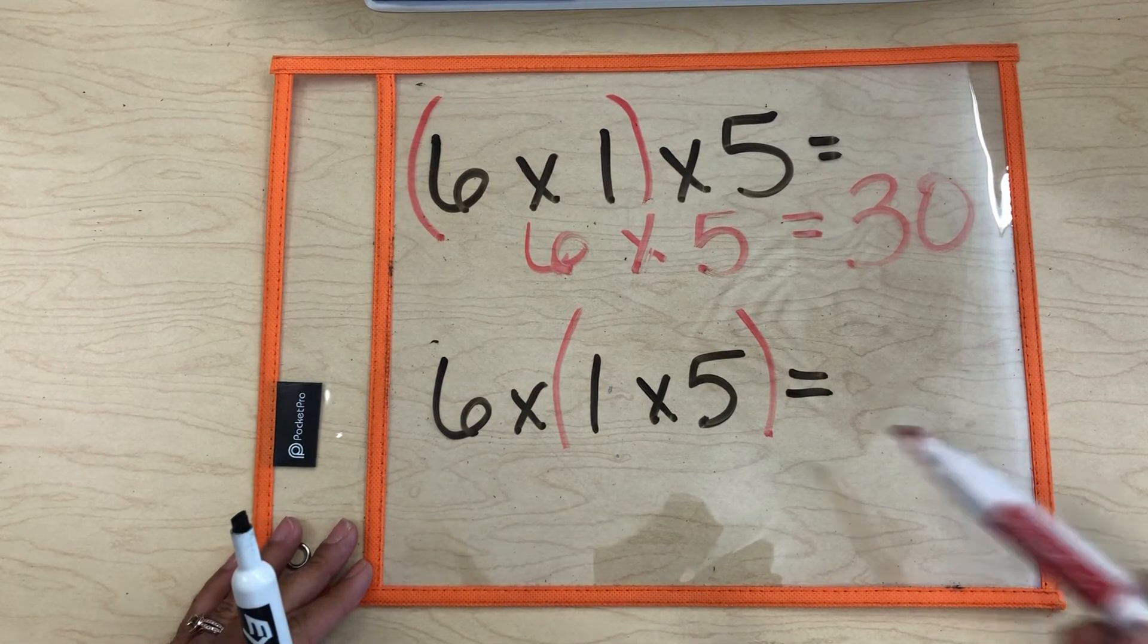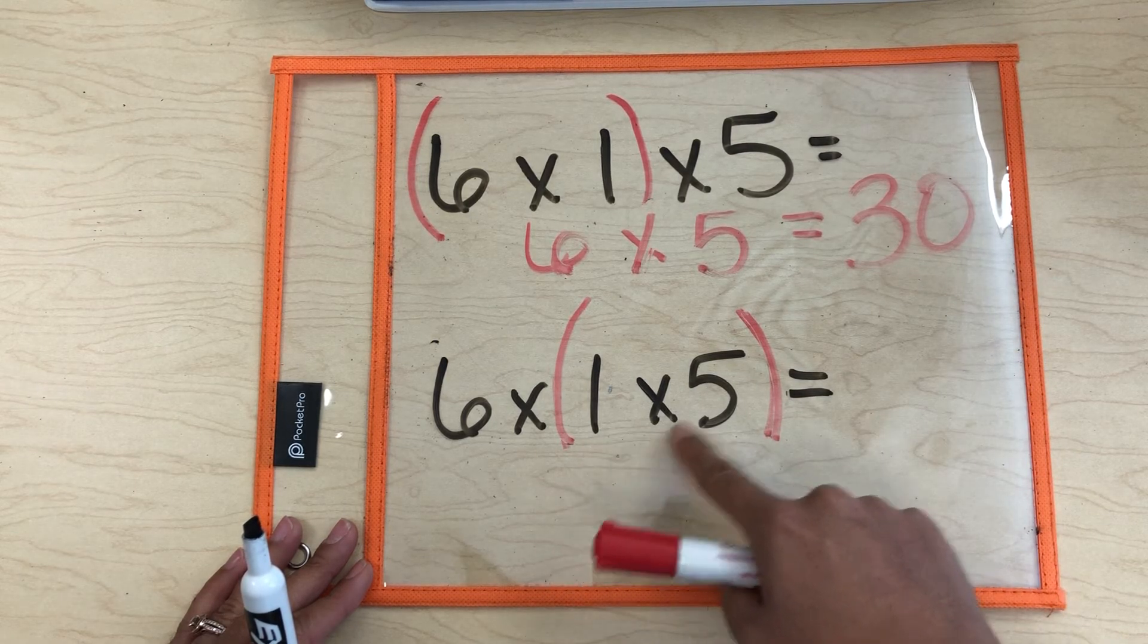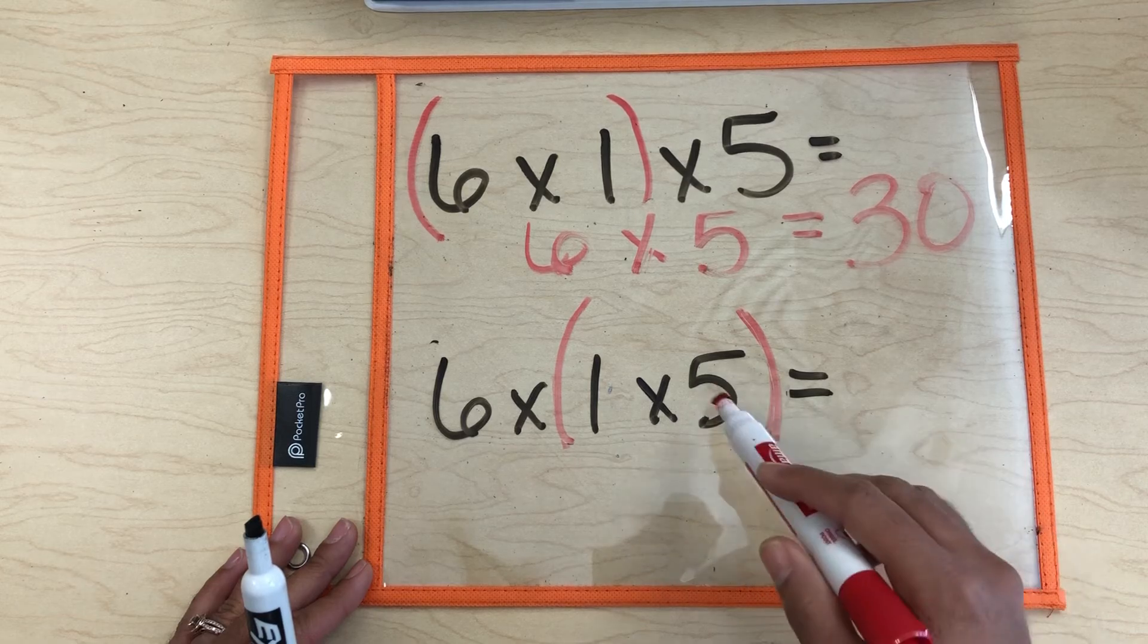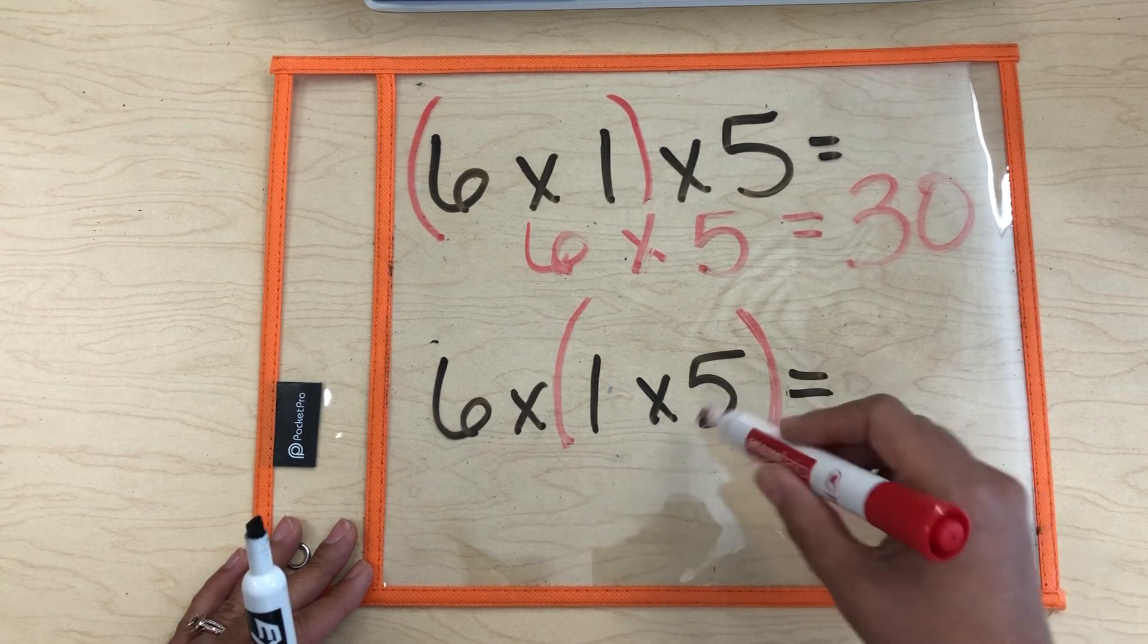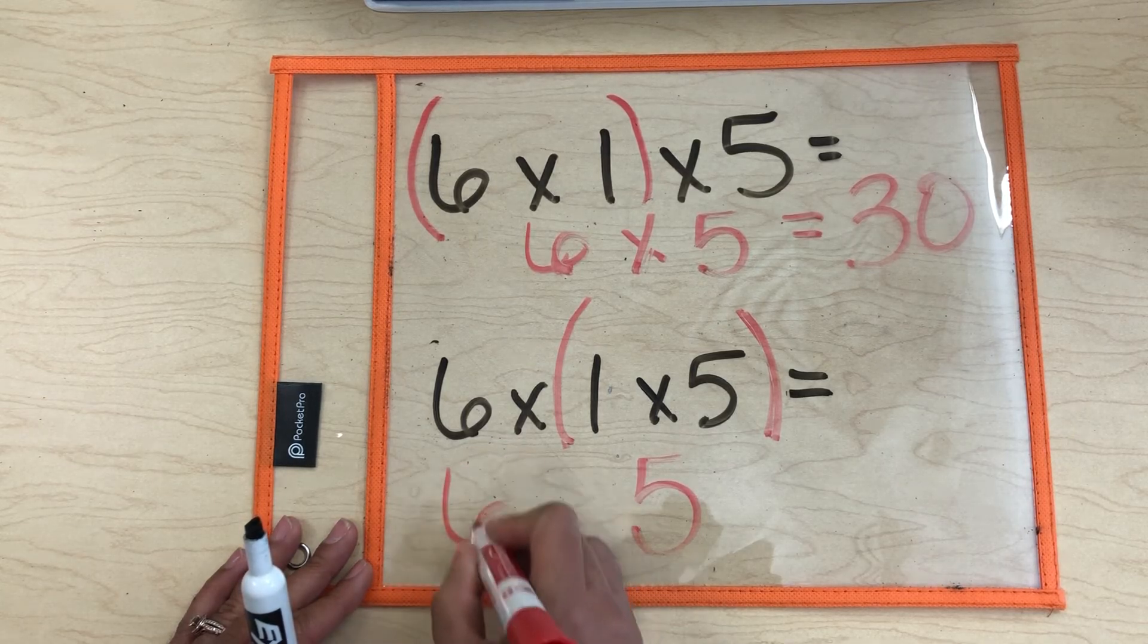Let's see if we've got it. Remember, we do what's inside of the parentheses first. So what is 1 times 5? Good. 1 times 5 is 5. Any number times 1 is the number itself. There we go. 5. And all we do is drop the rest of this down.